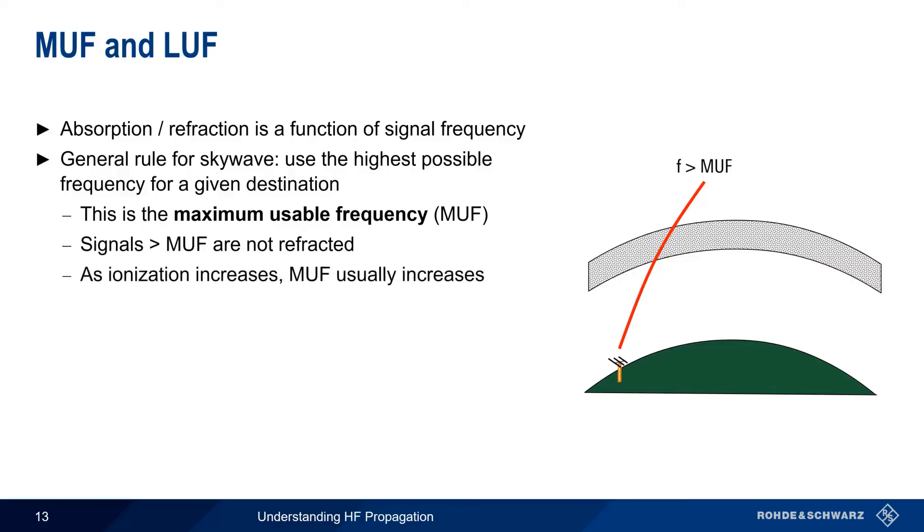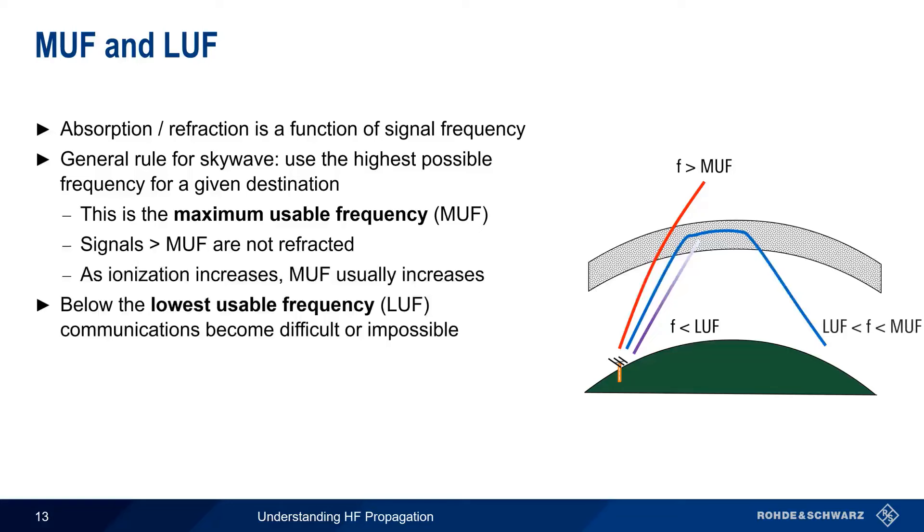Another important frequency threshold is something called the lowest usable frequency, or LUF. When the signal frequency is at or below the LUF, communication becomes difficult or impossible due to signal loss or attenuation. So we want to choose a frequency that's somewhere between the LUF and the MUF.